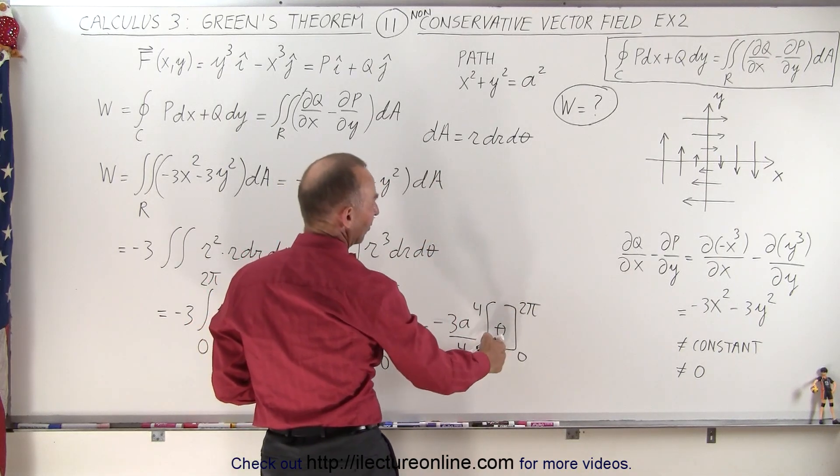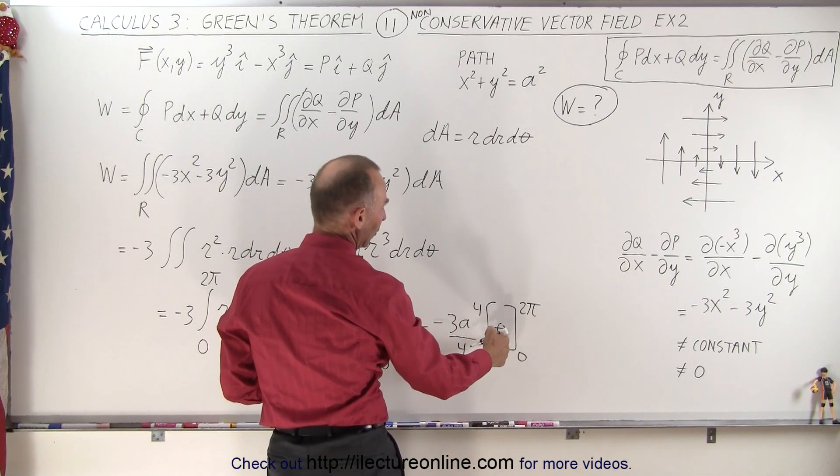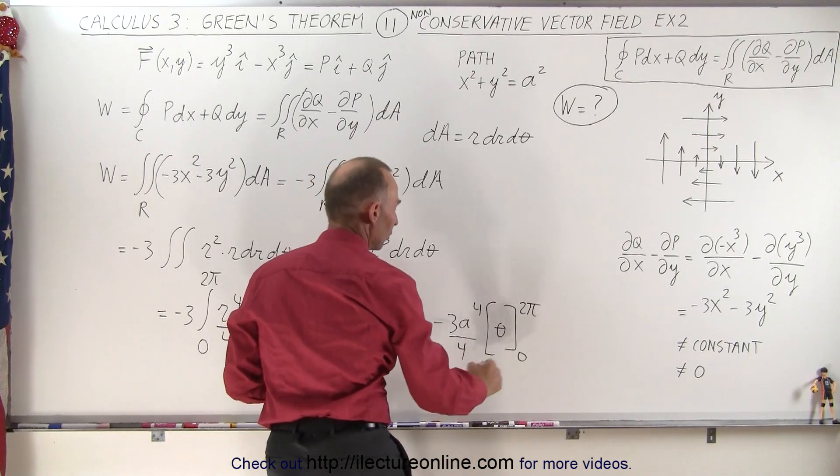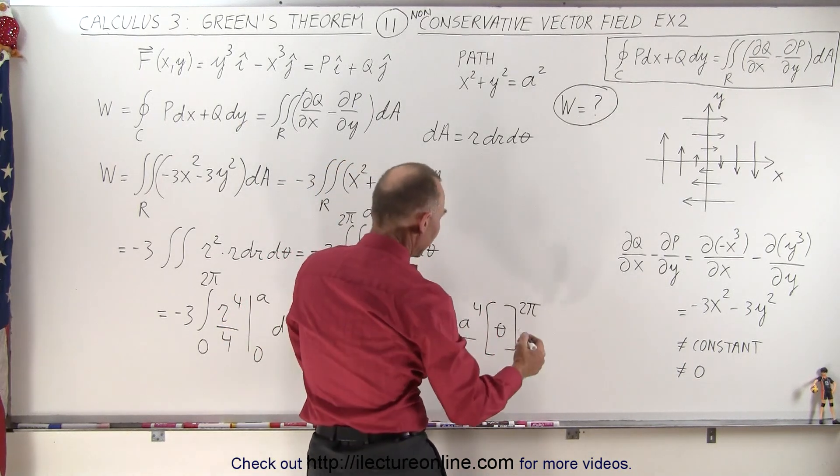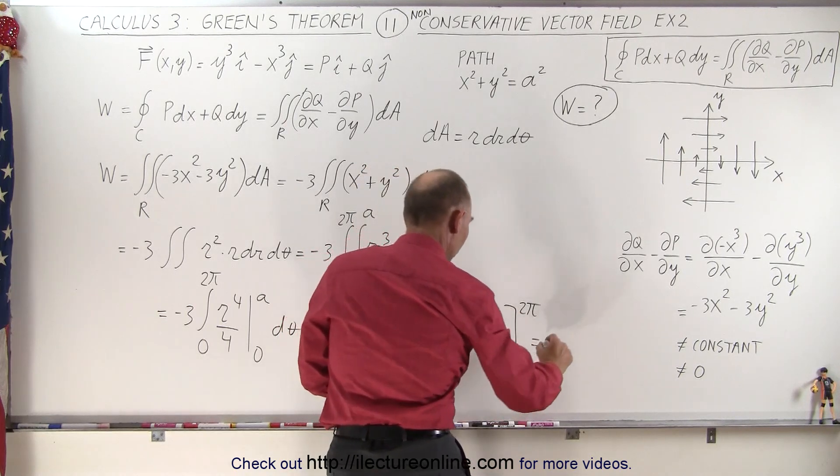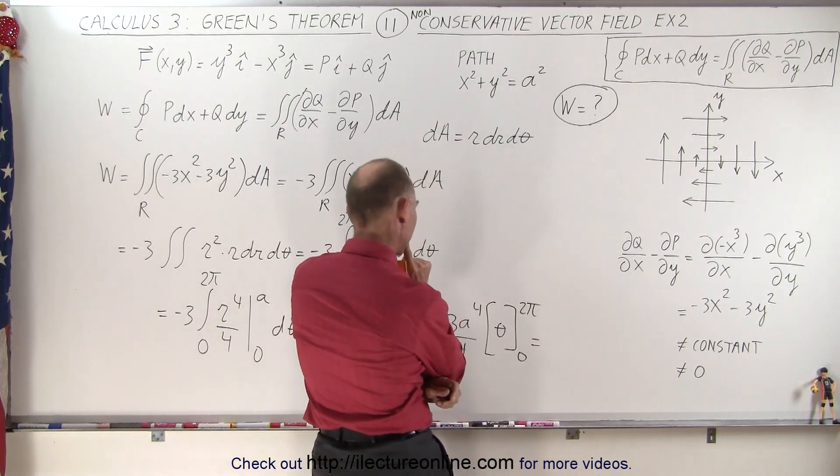And so when we plug that in, 0 gives us nothing, 2 pi gives us 2 pi, the 2 and the 4 will cancel out, so this becomes equal to, not completely cancel out, but the 2 and the 4 will reduce to...